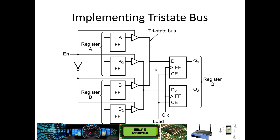When those are set up on the bus, you can determine when you want to load. To transfer register A to the output register, put a 1 on the enable, make sure register A is set up on the bus, then activate your load line. On the next clock cycle, output Q takes on whatever is on A1 and A2. To transfer register B, put a 0, which activates the B register onto the buses, and similarly load it and clock it in.